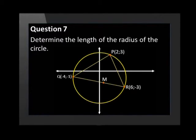Triangle PQR has vertices on the circumference of a circle with center M. The coordinates of the vertices are, for point P, (2, 3), for point Q, (-4, -1), and for point R, (6, -3). Determine the length of the radius of the circle.